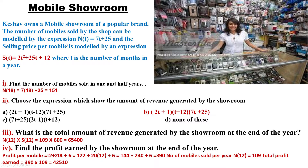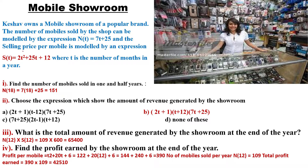n(t) = t + 25, and the selling price per mobile is modeled by the expression s(t) = 2t² + 25t + 12, where t is the number of months in a year. Your first question is: find the number of mobiles sold in one and a half year.